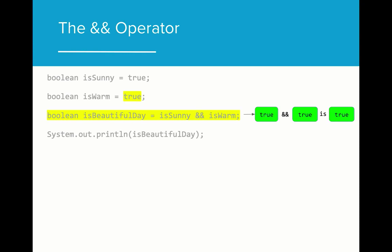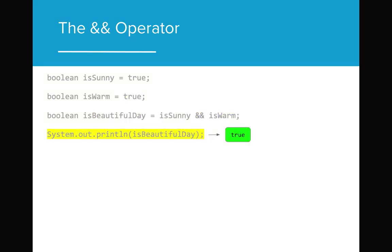If we change the value of isWarm to true, however, the result will change. isBeautifulDay now evaluates to true because the value of isSunny and isWarm both evaluate to true. The final result printed will be true.